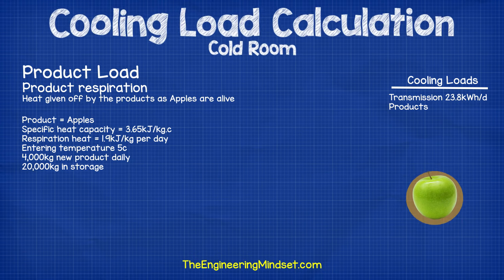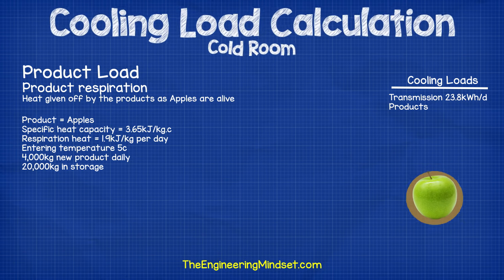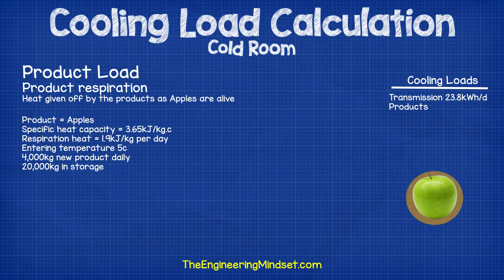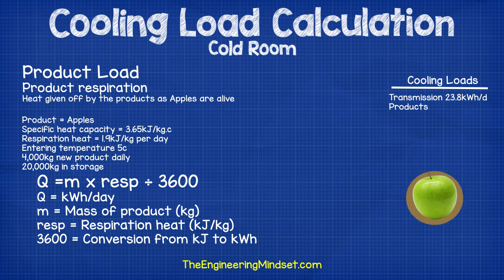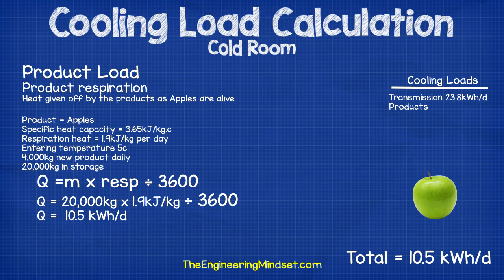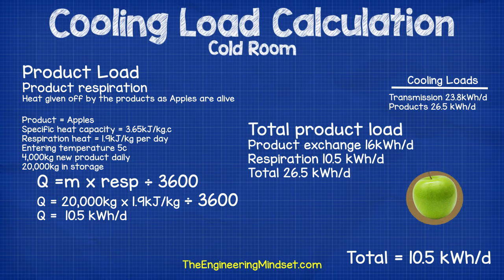Next we calculate the product respiration — the heat generated by living products such as fruit and vegetables. These generate heat because they are still alive; that's why we cool them down to slow their deterioration. For this example I've used 1.9 kilojoules per kilogram per day as an average, though this rate changes over time and with temperature. Using the formula q equals m multiplied by resp divided by 3600, where resp equals the respiration heat of the product, this comes out at 10.5 kilowatt hours per day. Summing the product exchange and respiration load gives a total product load of 26.5 kilowatt hours per day.